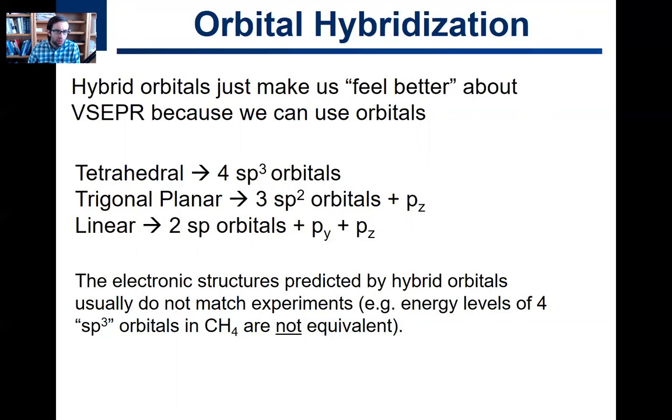So in general, hybrid orbitals just make us feel better. There's no physical basis for this. There's no wave function mixing that happens this way quantum mechanically. Linus Pauling just got stuck, and he came up with this idea to solve the problem. And so as you know, you make three sp2 orbitals. If you're trigonal planar geometry, linear has two sps, and then you have the unhybridized py and pz. Again, all of this is sort of just a figment of originally Linus Pauling's imagination.